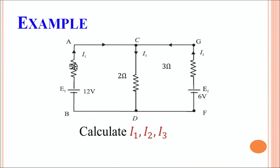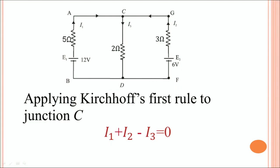Let us consider another example. This circuit has two batteries: E1 offering 12 volts and E2 offering 6 volts. Current I1 flows in one part, current I2 in another, and current I3 flows through the 2-ohm resistor in the middle branch. The question is to calculate I1, I2, and I3. Applying the first rule to junction C: I1 and I2 are both directed towards C, while I3 is directed away. So the first rule gives: I1 plus I2 minus I3 equals zero.